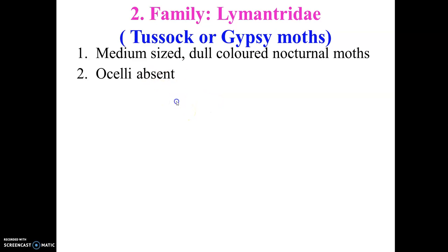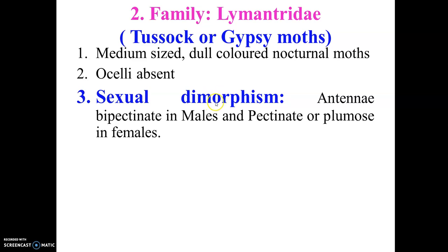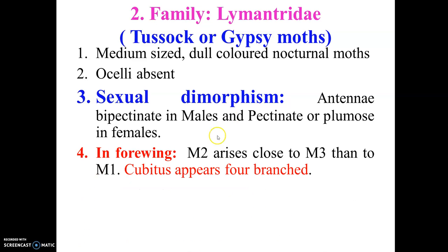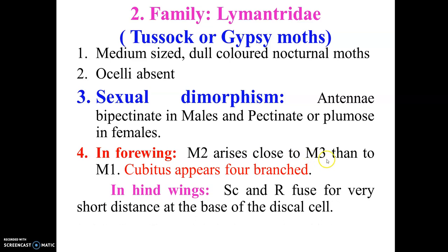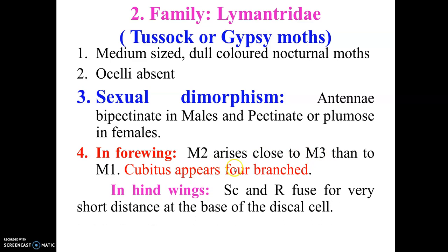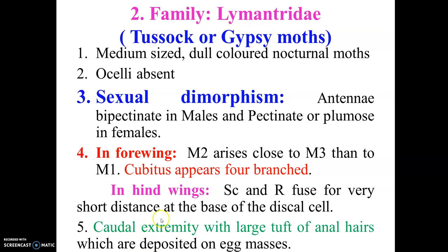Ocelli are absent in Lymantidae. Sexual dimorphism is seen in terms of antennae. In the fore wings, M2 is arranged closer to M3 than to M1, and the cubitus appears four-branched. One important character is that the tip of the abdomen or caudal extremity comprises a large tuft of anal hairs.